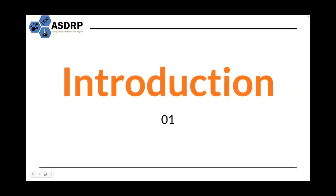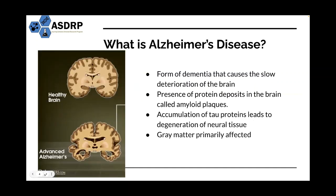Before we start off with any project, it's important to understand why exactly we're taking the time and effort to build this. So what is Alzheimer's disease? It's a form of dementia that causes the slow deterioration of the brain. Brain tissue is made up of white matter and gray matter, but in this disease, the gray matter is primarily affected. Protein deposits called amyloid plaques build up, and when these beta proteins bunch together, they cause a breakdown of the gray matter. This disease affects specific brain sections including the hippocampus, cerebral cortex, and the temporal lobe. But because this deterioration is such a slow process, most patients are often unaware of their condition until severe symptoms show or even death occurs.